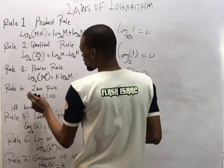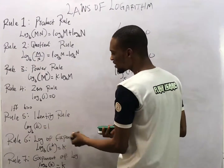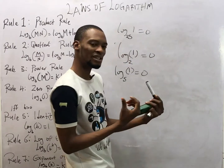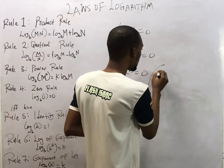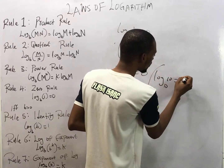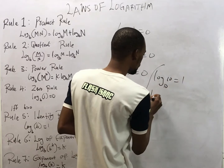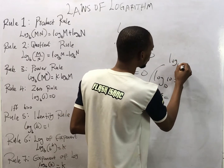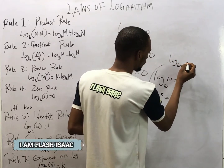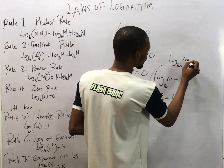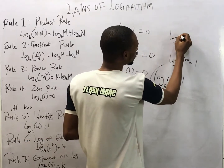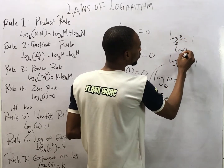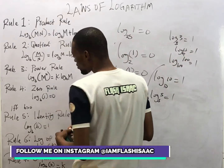The fifth law is the identity rule. It states that when the number and the base are the same, the answer is 1. So log base 10 of 10 equals 1, log base 5 of 5 equals 1, log base 3 of 3 equals 1, and log base 4 of 4 equals 1. That's the identity rule of logarithm.